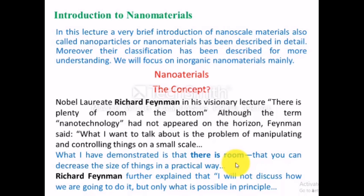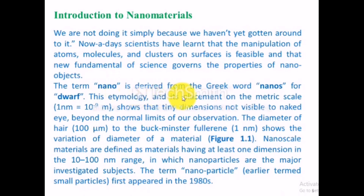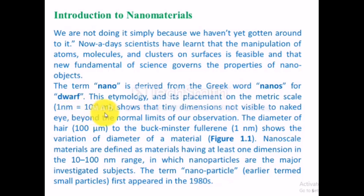This is the meaning of 'plenty of room at the bottom': if we move from microscopic size to smaller sizes, we can reach the atomic or molecular level, which is far smaller than nanomaterials. The term 'nano' is derived from the Greek word 'nanos,' meaning dwarf — used to describe those shorter in length. This etymology, and its placement on the metric scale where 1 nanometer equals 10⁻⁹ meters, shows these are tiny dimensions not visible to the naked eye, beyond the normal limits of our observation.